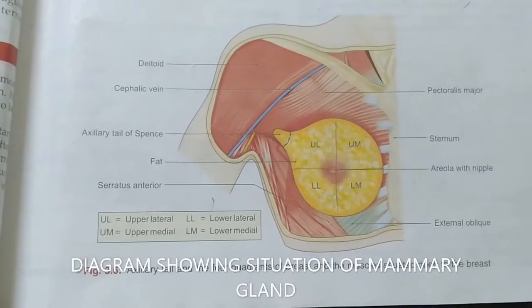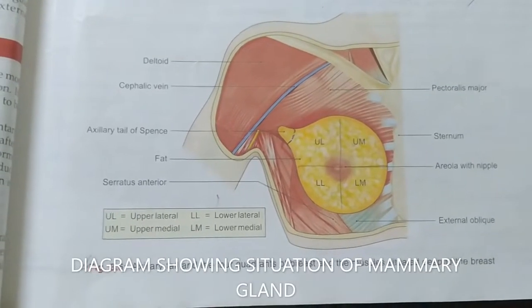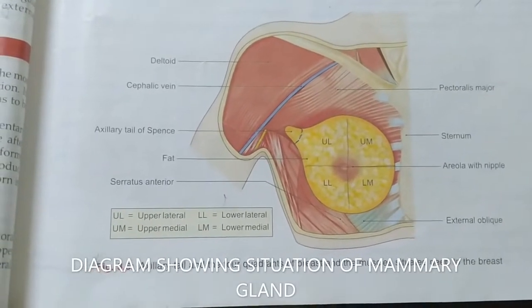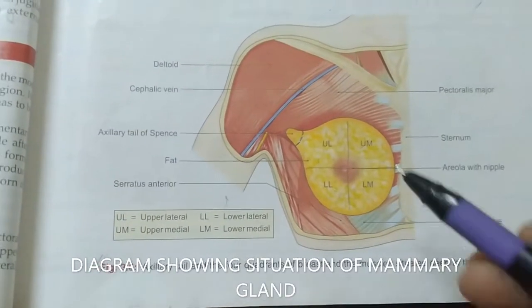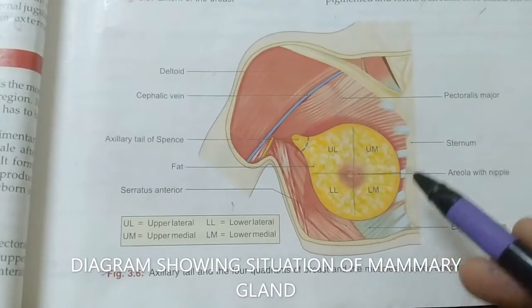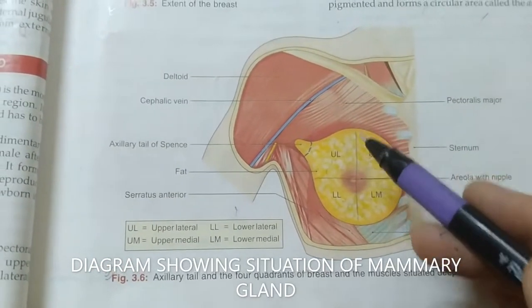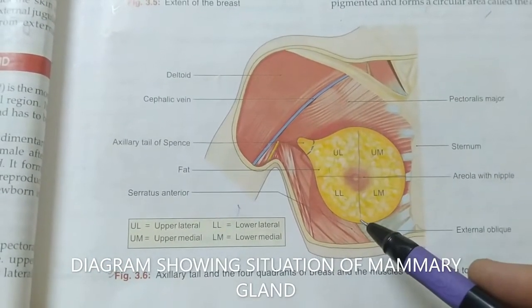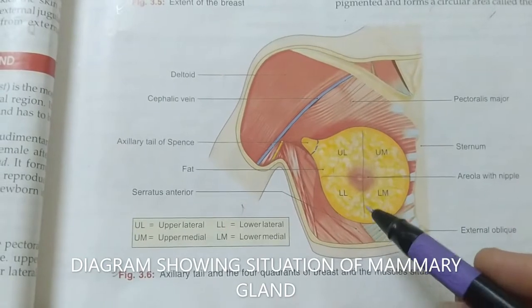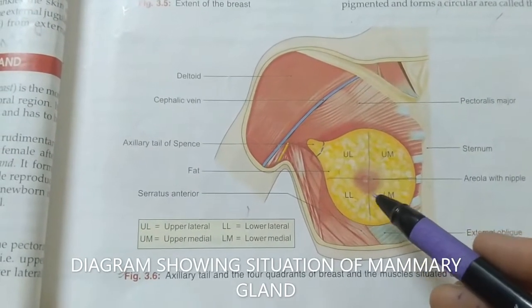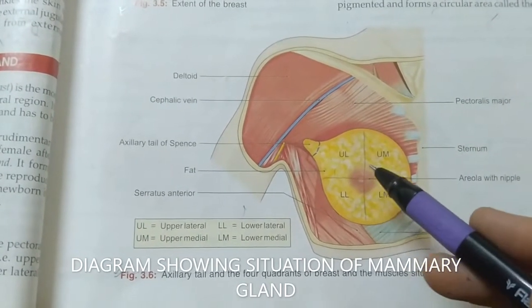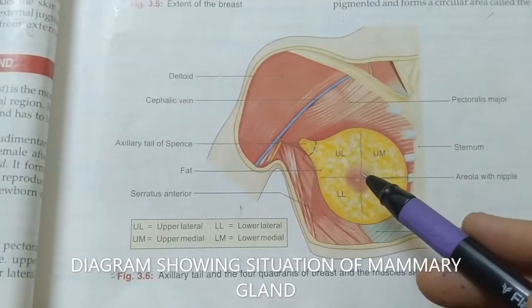This is the diagram of the breast where we can easily see the introduction and situation. The breast is present from the 2nd to the 6th rib level. This is the nipple and this is the areola.